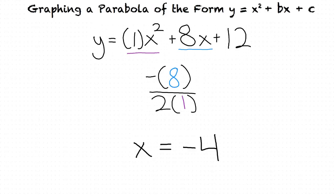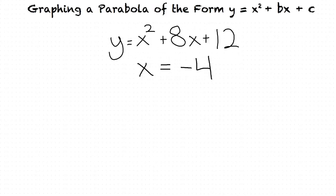So now that we have our x value, how are we going to find the corresponding y value? We find the y value for our vertex by taking our x value and inserting it into our original equation. This results in y equals negative 4 squared plus 8 times negative 4 plus 12.